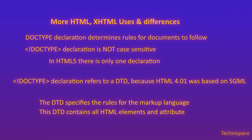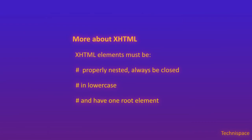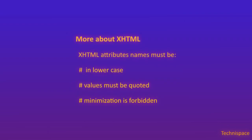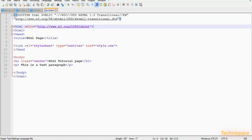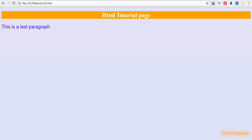This DTD contains all HTML elements and attributes but does not include presentational or deprecated elements. XHTML elements must be properly nested, always closed, in lowercase, and have one root element. XHTML attribute names must be in lowercase, values must be quoted, and attribute minimization is forbidden. This example shows an XHTML document with the minimum required tags, and there are several DOCTYPE declarations available.